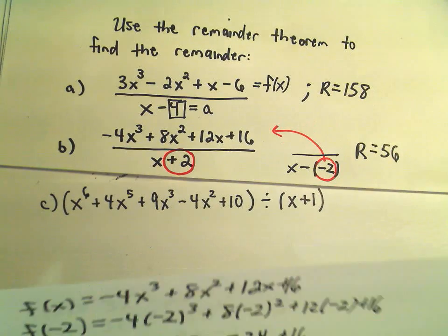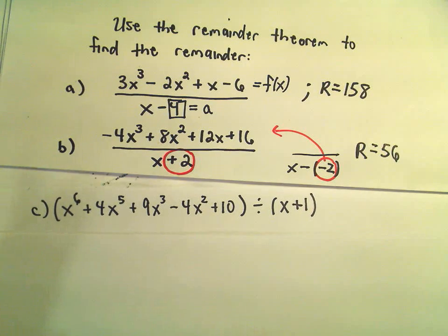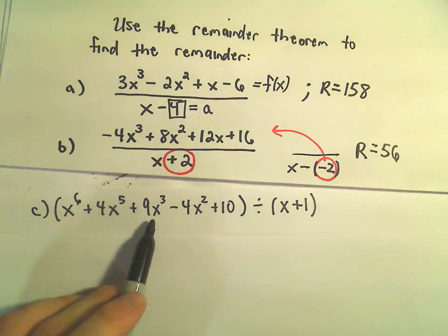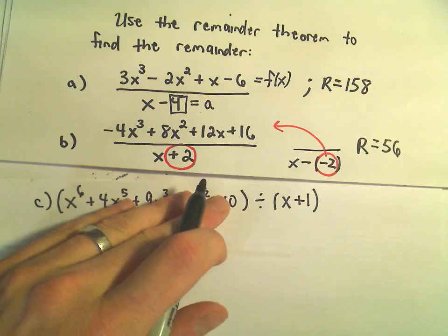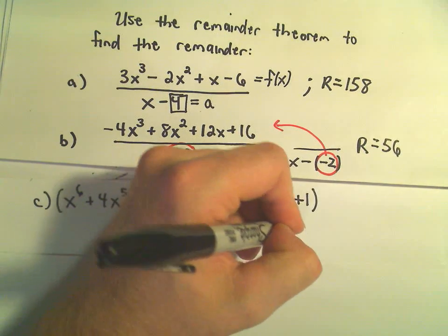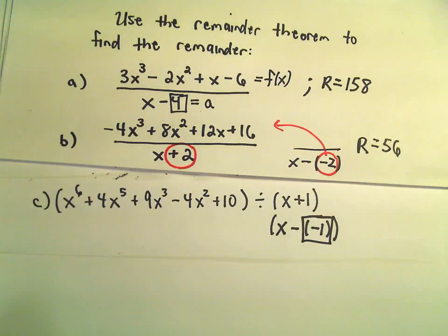What the heck, let's go ahead and do the last one. It doesn't look too terrible. Notice we've got x⁶+4x⁵+9x³-4x²+10 divided by x+1. I could write this as x-(-1). That's going to be my a value that I'm plugging in.